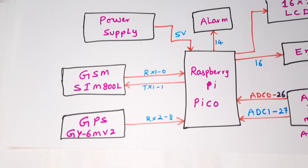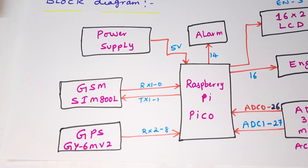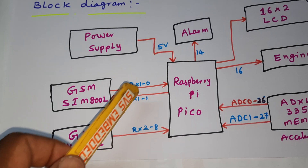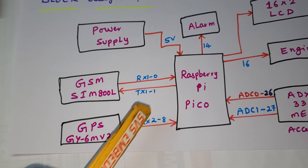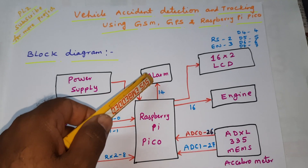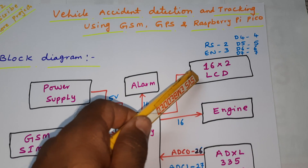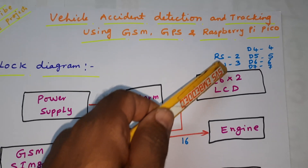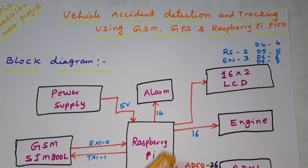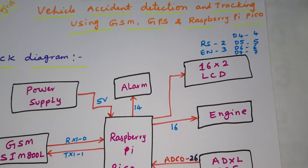We are using a GSM SIM800L module and one GPS module. The GSM is connected with RX0 and TX0. The GPS is connected to RX2. One alarm is connected to GPIO 14 and 16. A 16x2 LCD display is connected with RS, Enable, D4, D5, D6, D7 on the second through seventh GPIO pins.